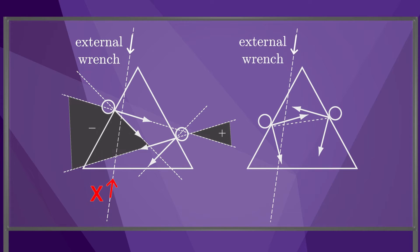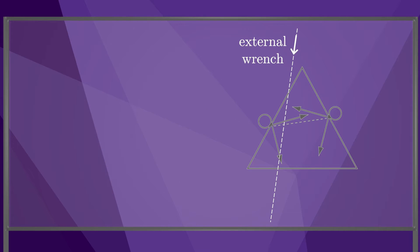As an example, imagine the triangle is subjected to the same external wrench. Then the wrench shown in green has to be generated by the fingers to maintain static balance. This wrench can be obtained as a positive linear combination of one friction cone edge with a force inside the other friction cone.